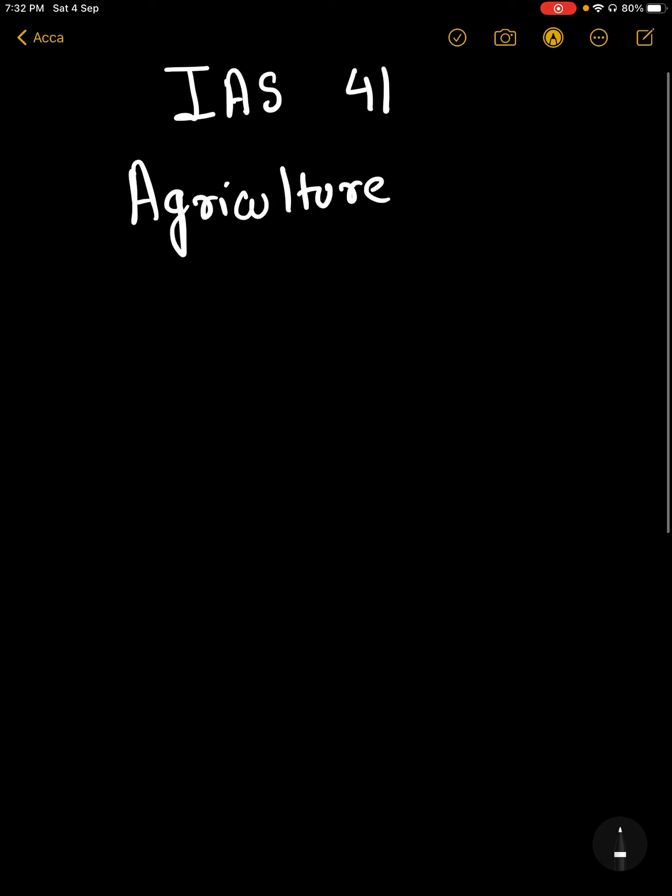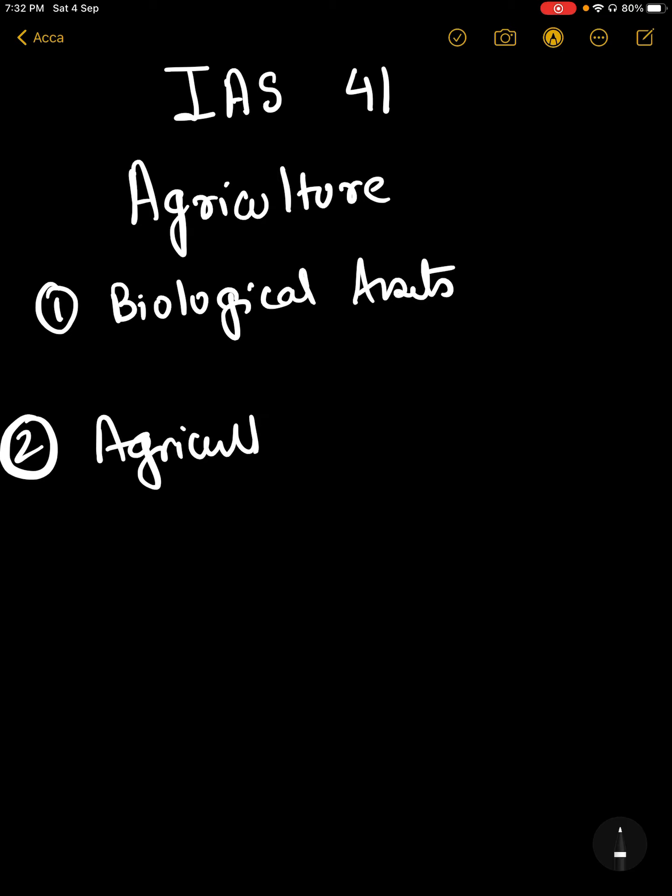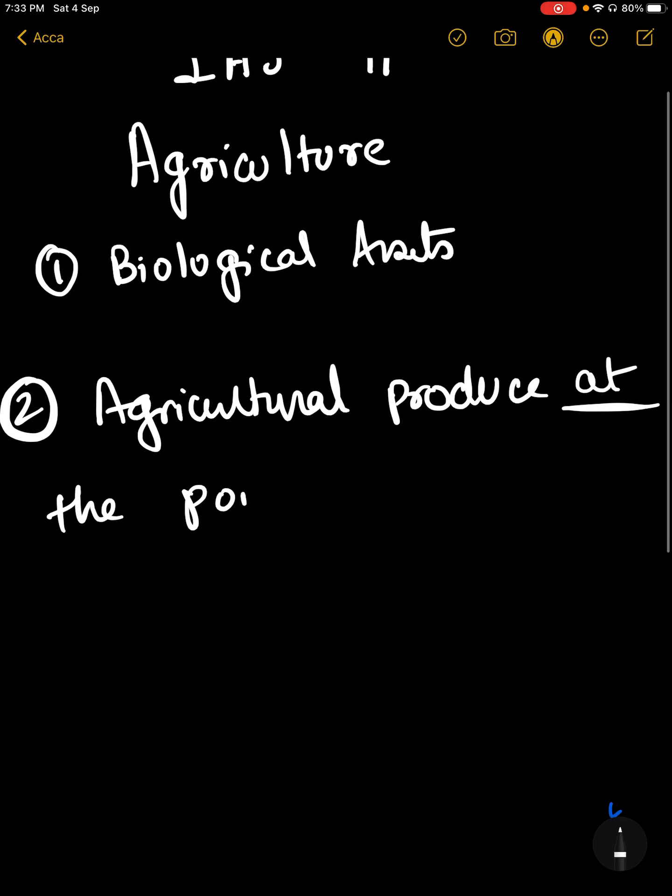IAS 41 includes biological assets and agricultural produce at the point of harvest.